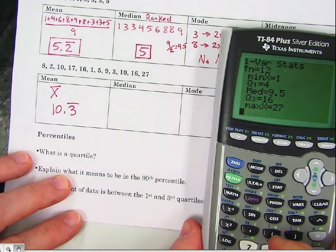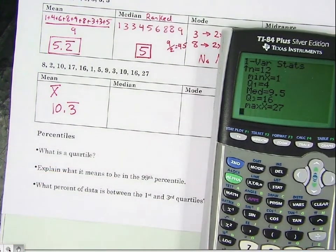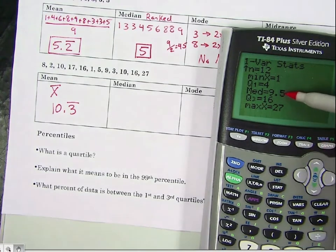So when you look at this, these are the low, the high, and your three quartiles. So right here, your median is 9.5.